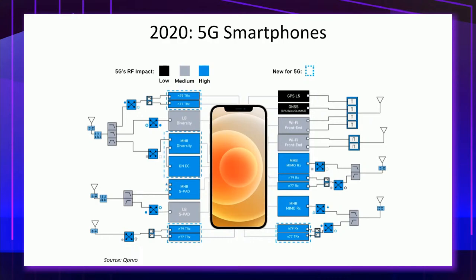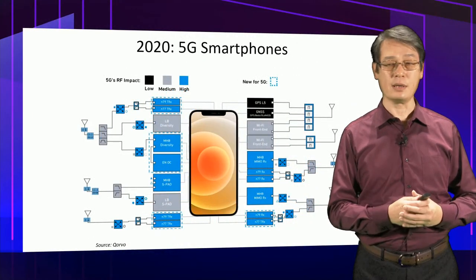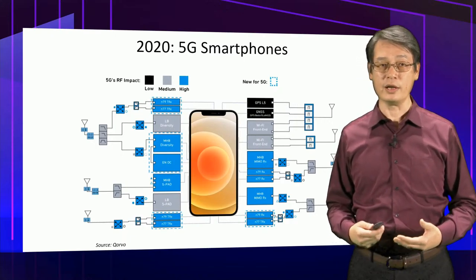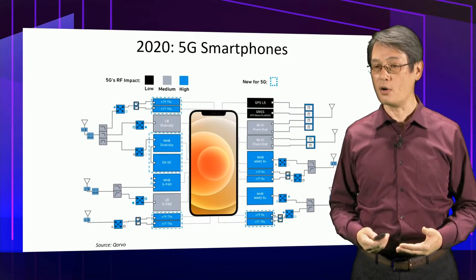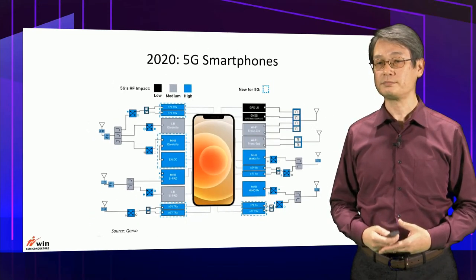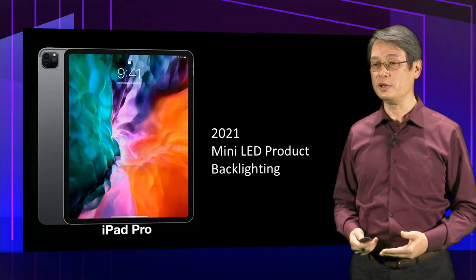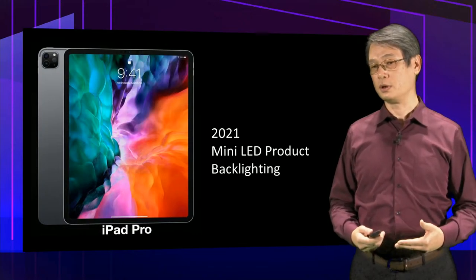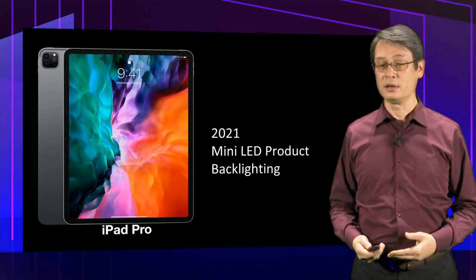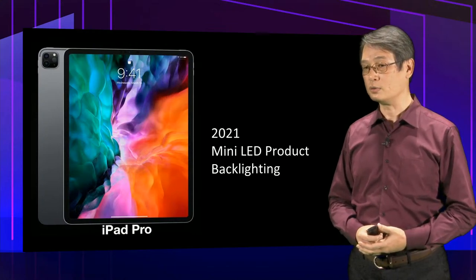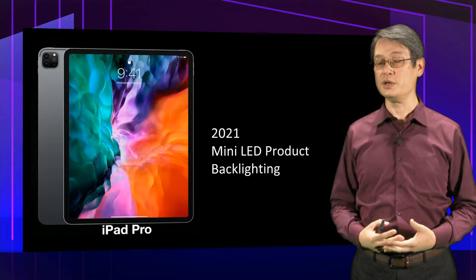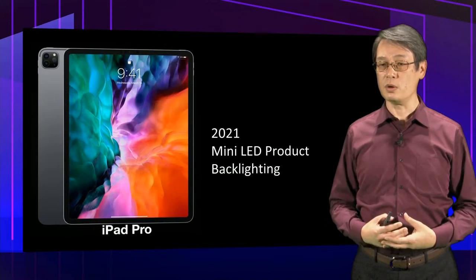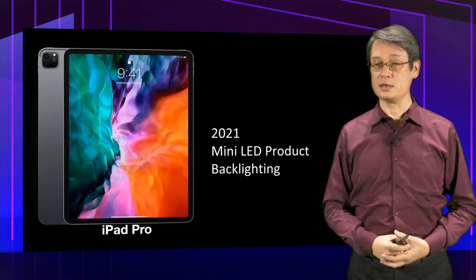5G smartphones contain a lot more compound semiconductor content, simply because there are newly created frequency bands for 5G, and therefore more gallium arsenide power amplifiers are needed per phone. This year, mini LED was introduced as the backlighting for flagship tablets as a display technology. We believe in the coming few years, micro LED will come out and further advance display technology.